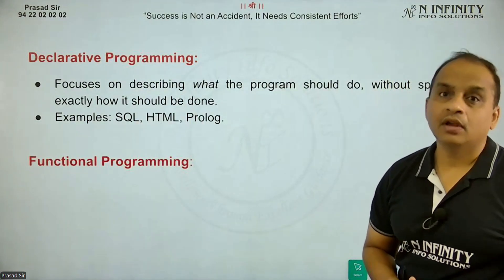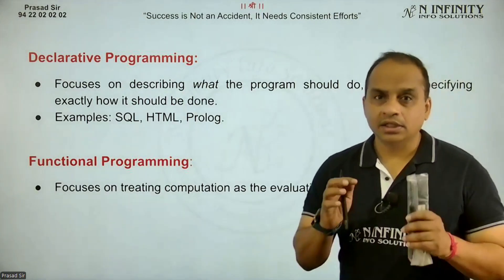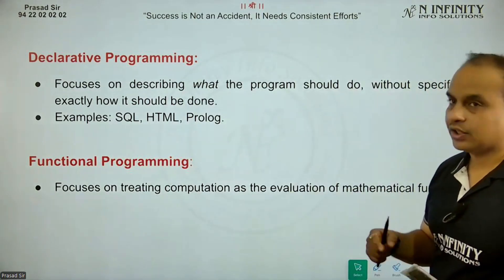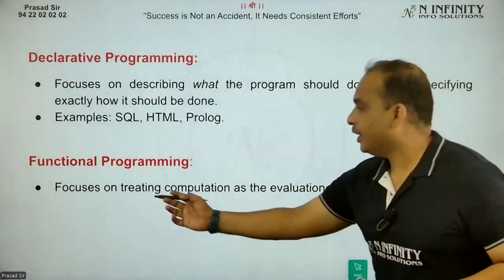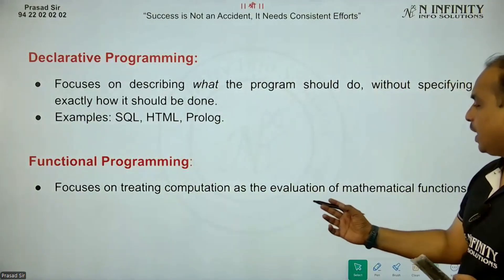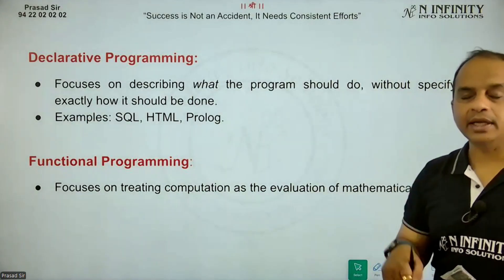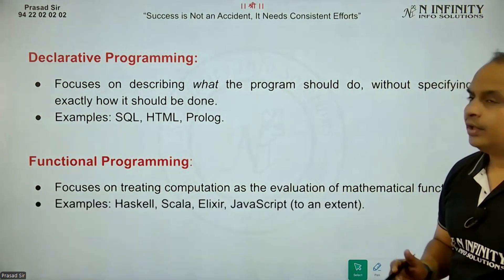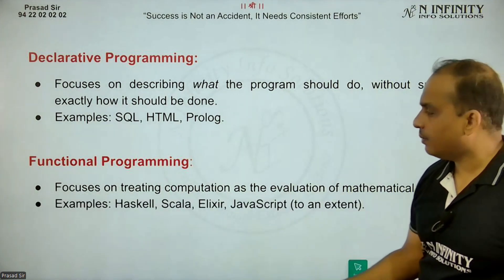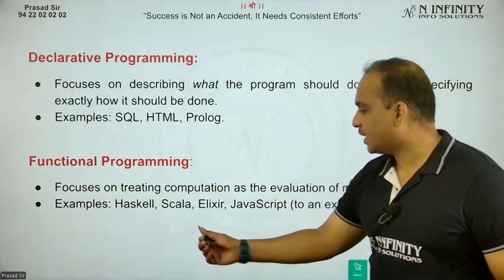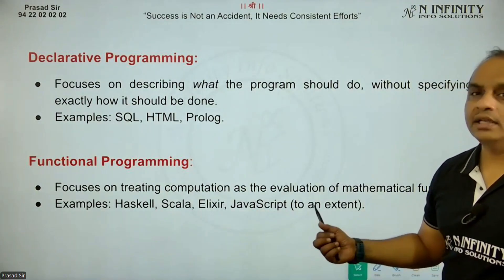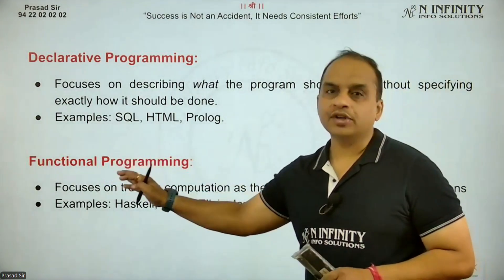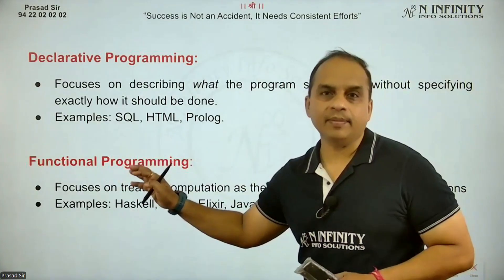The next programming paradigm is functional programming, where the basic unit of working is the function. It focuses on treating computation as an evaluation of mathematical functions. Some examples include Haskell, Scala, Elixir, and JavaScript — which supports functional programming to a certain extent.